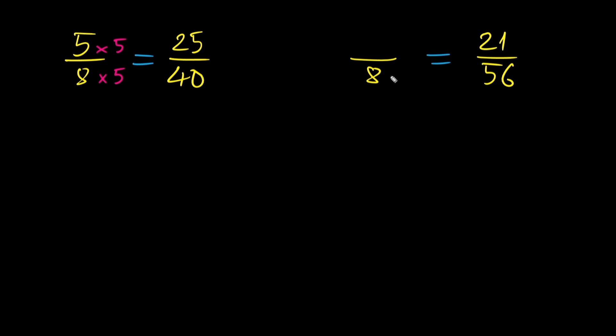For the next example, we have question mark over 8 equals 21 over 56. 56 divided by 8 is 7. So to get to 56 from 8, we multiply by 7.